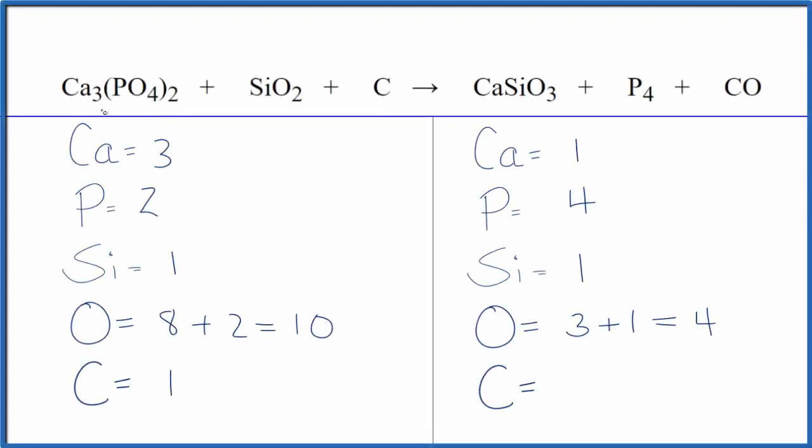In this video we'll balance the equation for calcium phosphate plus silicon dioxide plus carbon. It's kind of an involved equation to balance because we have lots of different oxygens around here and quite a number of different elements. So I've already counted all of the atoms up.